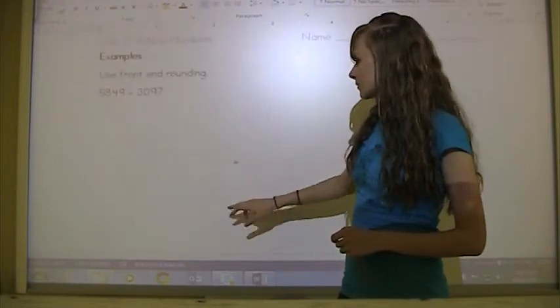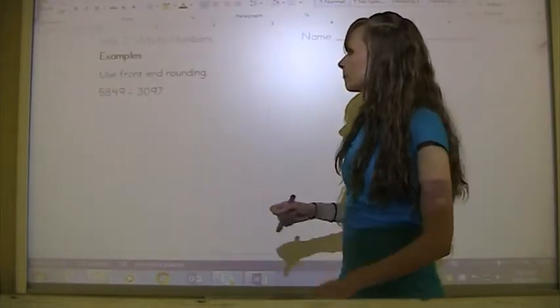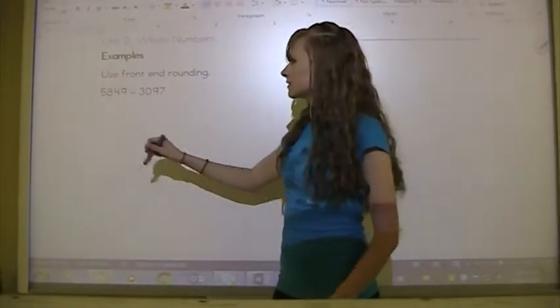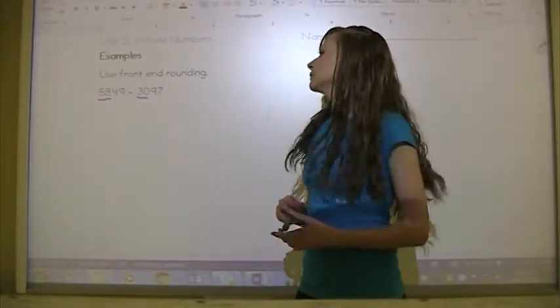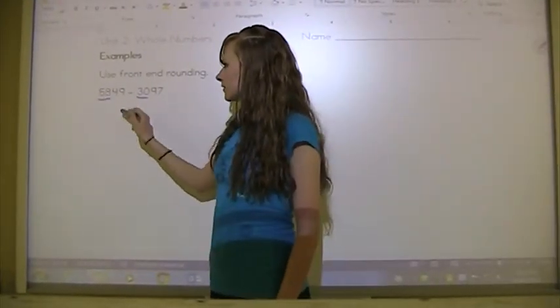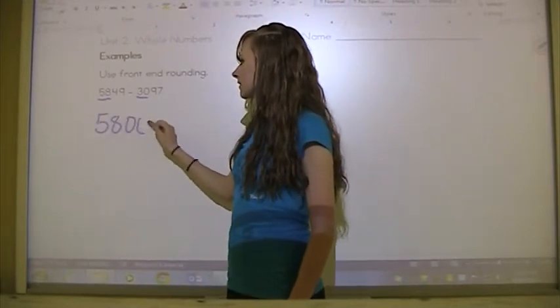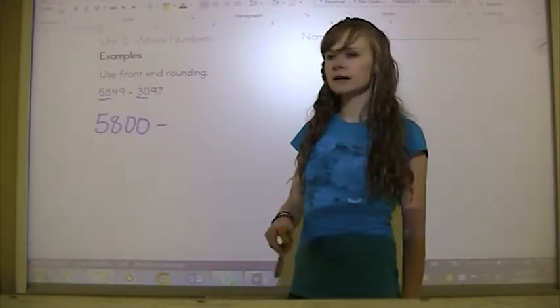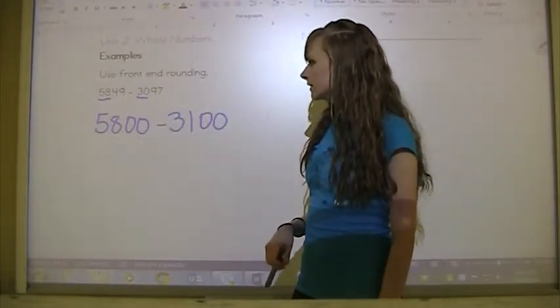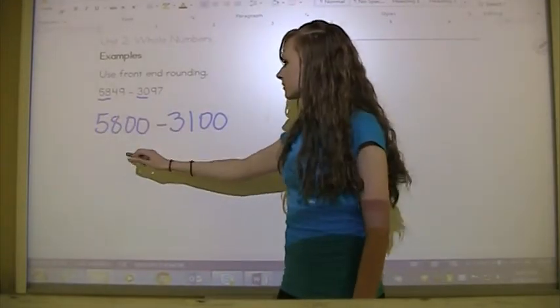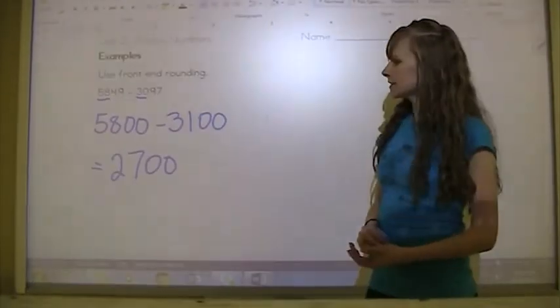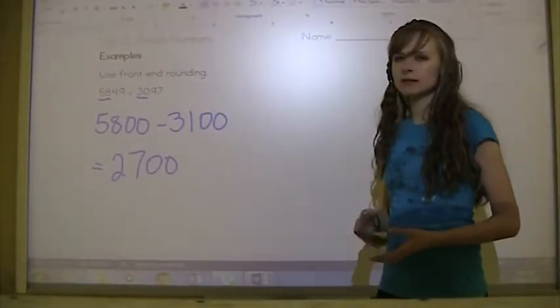You should be finished, so let's go through this together. Use front end rounding, and that's just regular rounding. Normally you use the front two numbers for front end rounding depending on what the numbers are. We've got 5,849 and that rounds to 5,800. We've got 3,097 and that rounds to 3,100. Then we subtract, so 5 minus 3 is 2, and 8 minus 1 is 7. That means our estimate is 2,700.